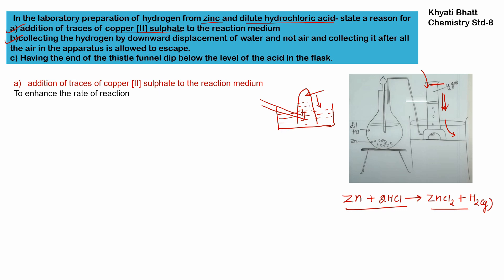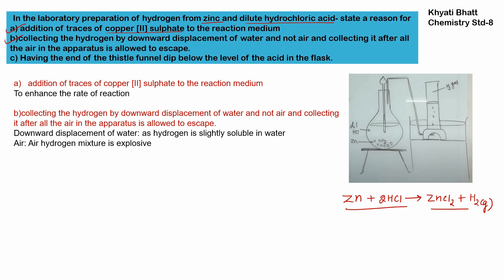We are not collecting hydrogen along with air — we collect it over water. The reason we avoid air is that a hydrogen and air mixture is explosive, so it is not advisable to mix pure hydrogen with air. Additionally, hydrogen is only slightly soluble in water, so we will not lose significant quantity of hydrogen by collecting it over water.